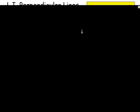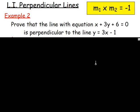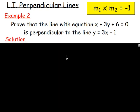Example two: prove that the line with equation x plus 3y plus 6 equals zero is perpendicular to the line y equals 3x minus 1. If the lines are perpendicular, multiplying their gradients together should give negative one. If it doesn't, they are not perpendicular. So we need to know the gradients of each line.